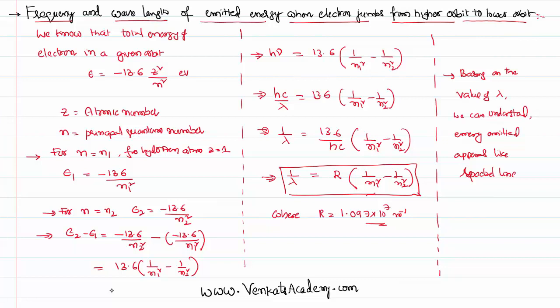So depending on from which orbit to which orbit the electron is jumping, what are the values of n1 and n2, we are going to get different wavelengths. Basing on the value of the wavelengths, we can identify whether that spectral line falls in a visible region or infrared region or ultraviolet region.